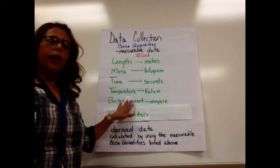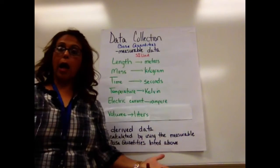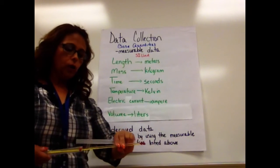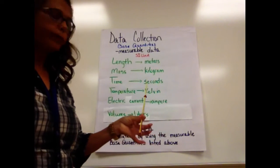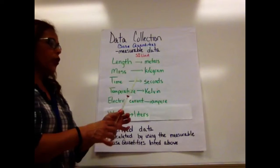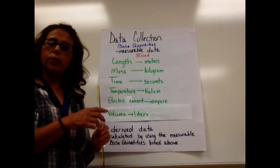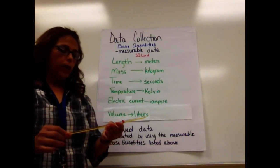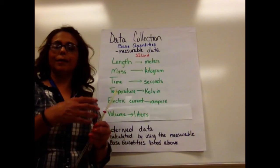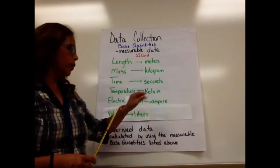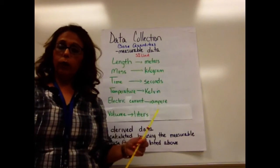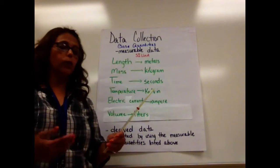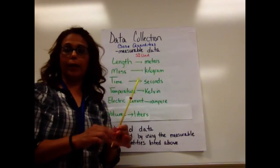Then we have temperature, which is a measurement of how hot or cold something is — really it's measuring the lack of heat. We can use old-fashioned thermometers, which we would read. Our thermometers are typically in Celsius, and then we convert to Kelvin. There are some thermometers in Kelvin, but we usually measure in Celsius and convert. We'll be using digital thermometers that make it easier to get a more accurate reading.